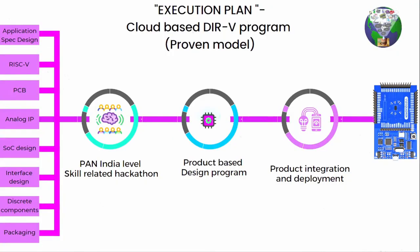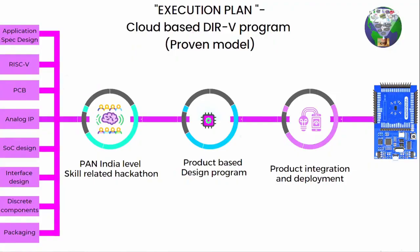We did a lot of Pan-India hackathons over the last year — close to 10,000 to 12,000 participants joined. The process was simple: we launched skill-based hackathons, selected winners, and gave them project statements related to the board. For example, someone worked on GPIO design, someone on the UART, and there was even a bandgap analog IP hackathon. Close to 12,000 people registered overall, and we selected 25 to 30 people who reached the final product integration and deployment phase. That group came together and built this board — from 12,000 to 25 people building the final product, that's a huge achievement.